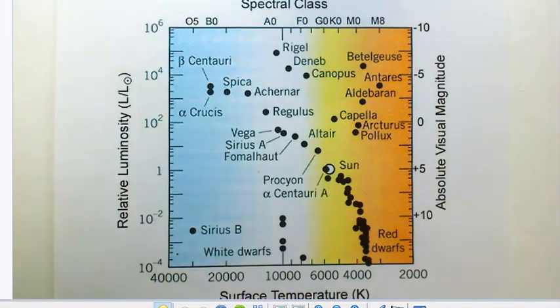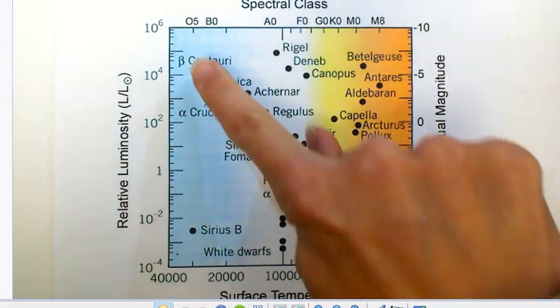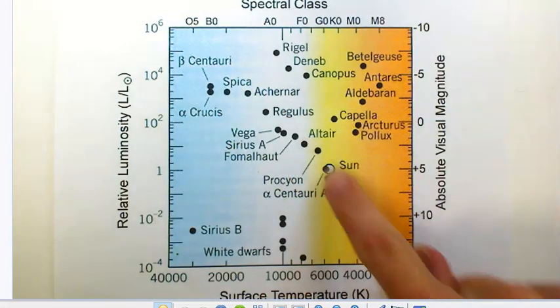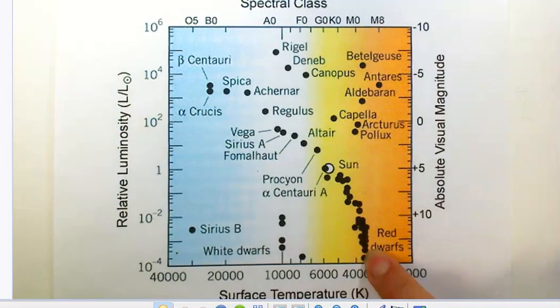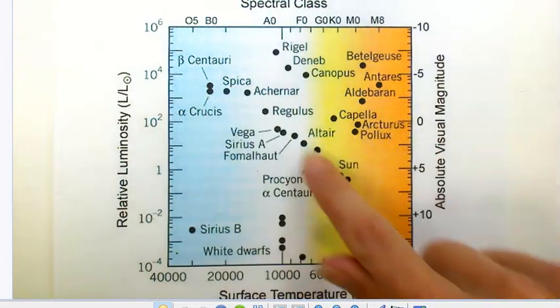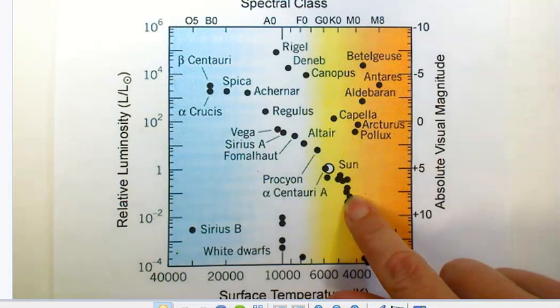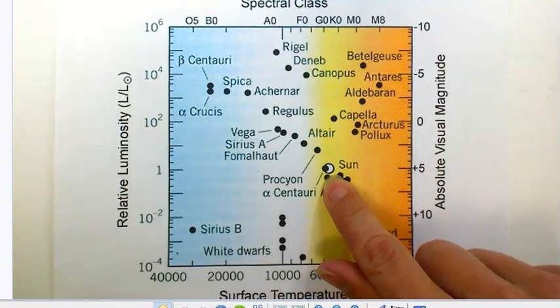Now we're going to take one last look at the Hertzsprung-Russell diagram. Remember that we have a diagonal band from hot and bright down to cool and dim. This diagonal band is known as the main sequence. Stars that sit in the main sequence are kind of living the main part of their life. They are fusing hydrogen. The sun is a main sequence star right now.